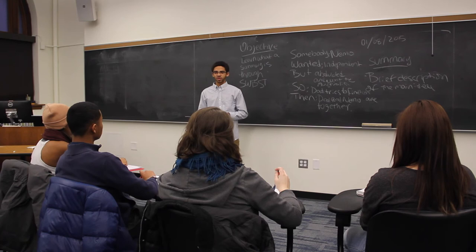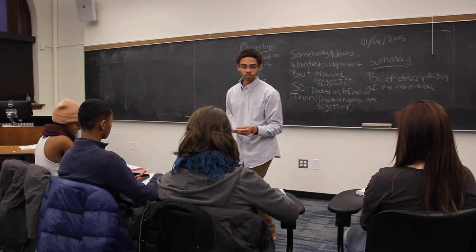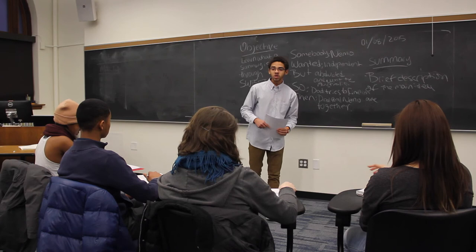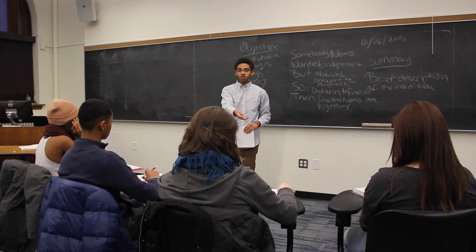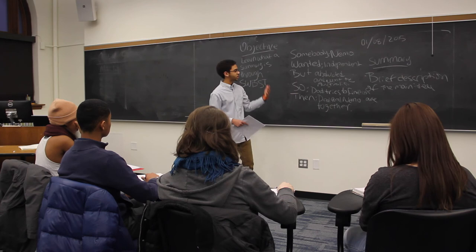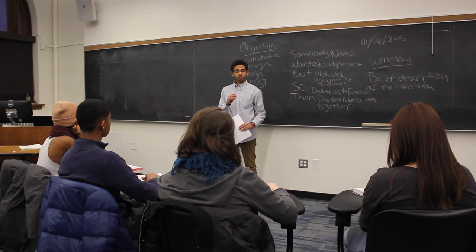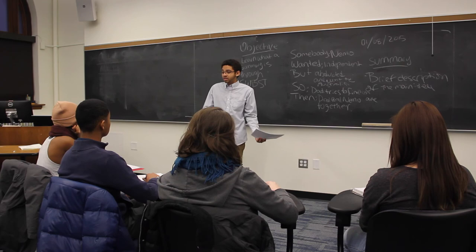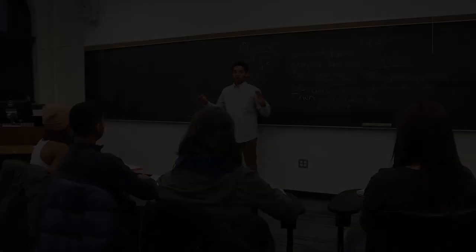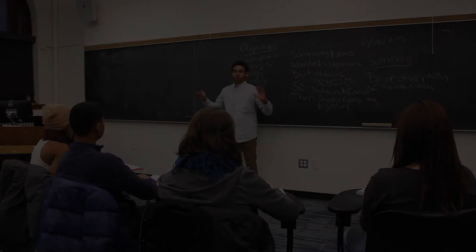What I have here is a news article I picked up last week. As you might notice, the headline is missing. I want you guys to break off in pairs and do two things. On the worksheet I gave you, fill in the blanks — somebody, what they wanted, the conflict, so on and so forth. And on a little slip of paper, write a headline — the main idea for the story — and give me a summary of what happened in the story.